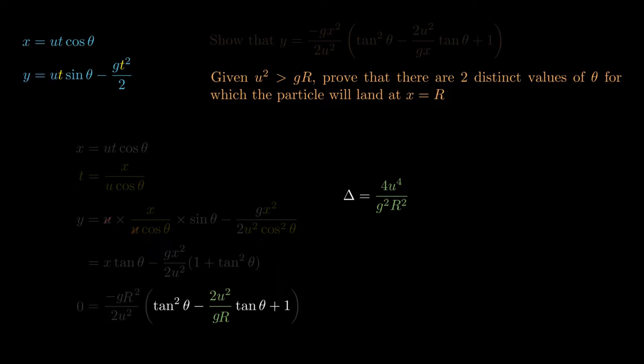Then it'd be minus 4ac, but both a and c are 1 here, so we just minus 4. We might aim to bring this 4 into the fraction, which means we can actually factor out a 4. So the only thing missing is that common denominator. So the 4 slips in as just g square r square.